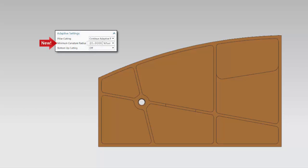The new minimum curvature radius option is in the adaptive settings section of the cutting parameters dialog box.